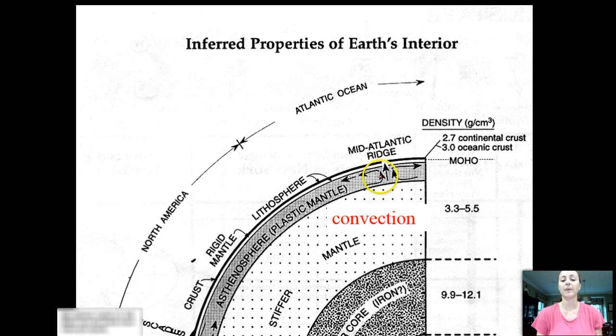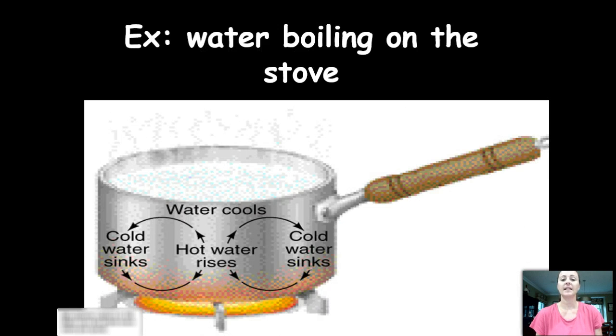These arrows represent the movement of the magma in that plastic mantle that changes densities as it heats up, and it creates a convection current. We're going to talk more about that later. And here is water boiling on the stove.